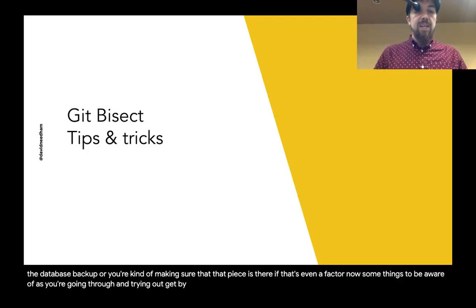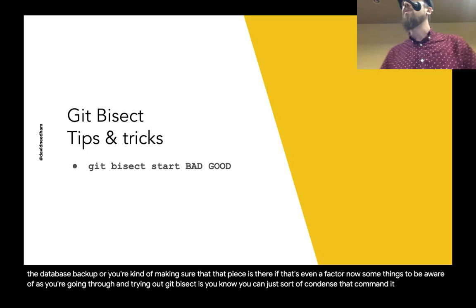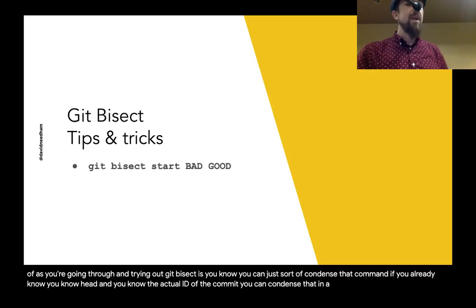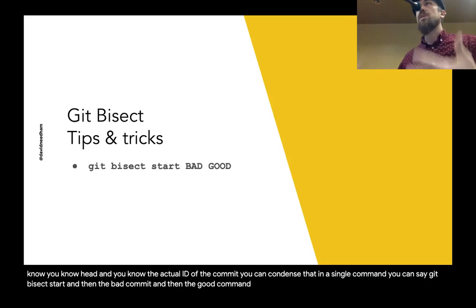Some things to be aware of as you try out git bisect: you can condense the command. If you already know HEAD and the actual ID of the commit, you can condense that into a single command — 'git bisect start,' then the bad commit, then the good commit — and it will start running right from there.